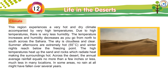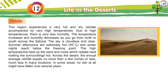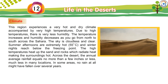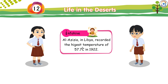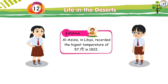Climate: This region experiences a very hot and dry climate accompanied by very high temperatures. Due to high temperatures, there is very less humidity. The temperature increases and humidity decreases as you go from north to south across the Sahara. The sky is cloudless and clear. Summer afternoons are extremely hot — 55 degrees centigrade — and winter nights reach below the freezing point. The high temperatures heat up the sand and rocks which radiate heat, making the surroundings hot. The annual average rainfall equals no more than a few inches or less, much less in many locations. In some areas, no rain at all might have fallen over several years. Info Hive: Al-Azizia in Libya recorded the highest temperature of 57.7 degrees Celsius in 1922.